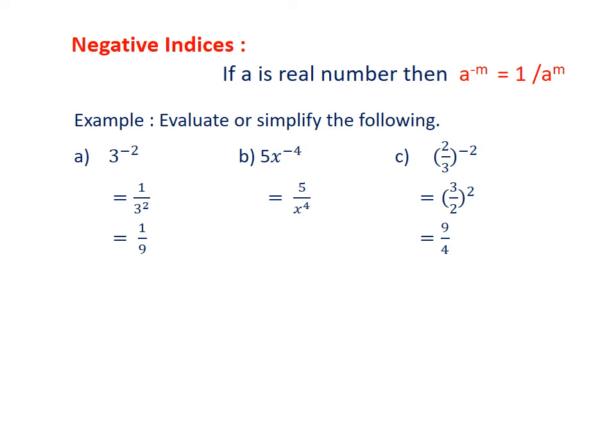Part b: 5x^(-4). Negative 4 is the index only with power x, so we can change this index into positive as 5/x^4. In part c, we have (2/3)^(-2). We take reciprocal of this fraction, getting (3/2)^2. By taking reciprocal, we change the sign of the index. Now (3/2)^2 = 9/4.